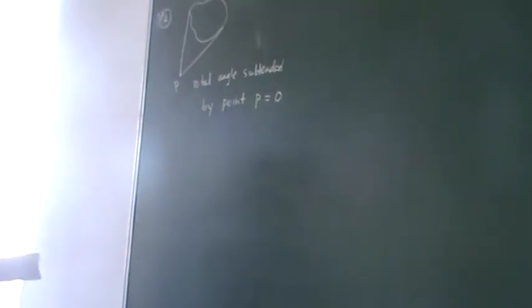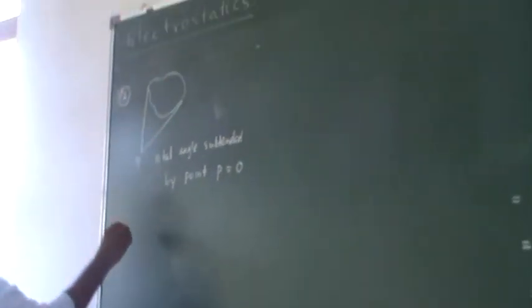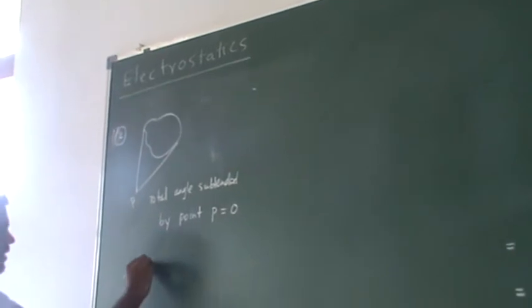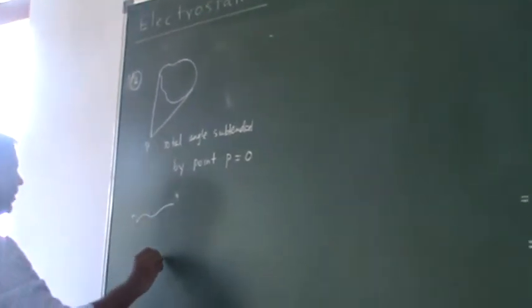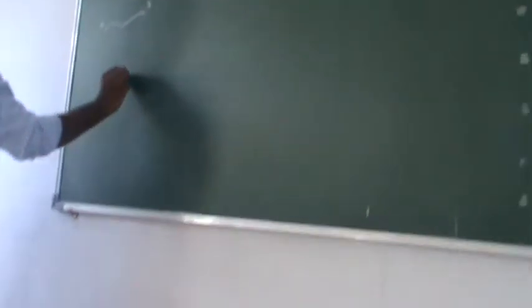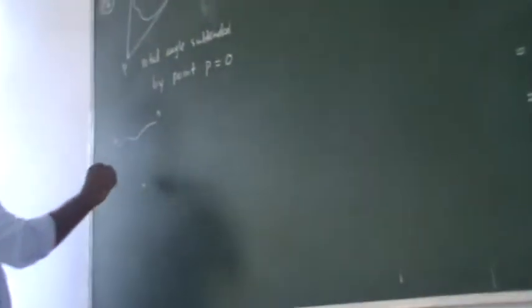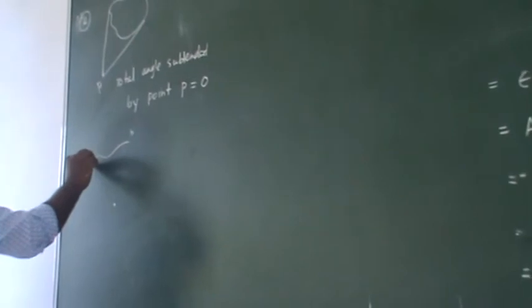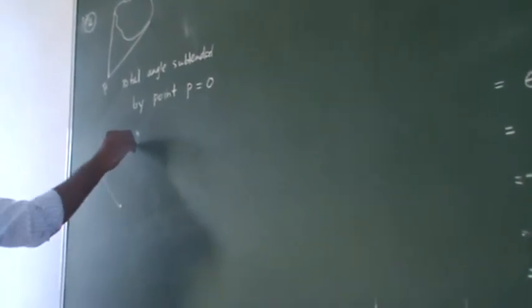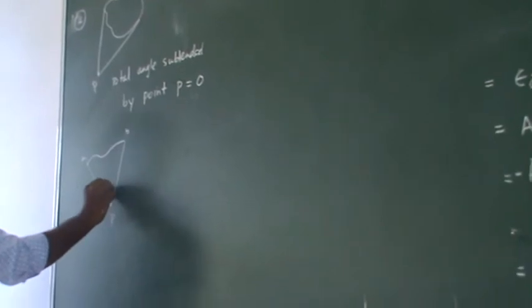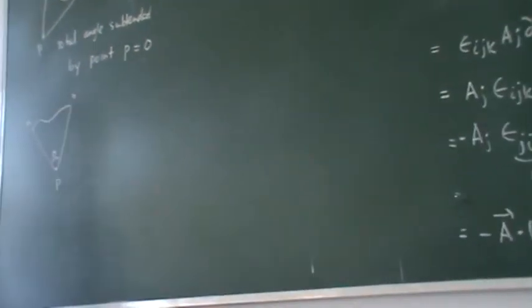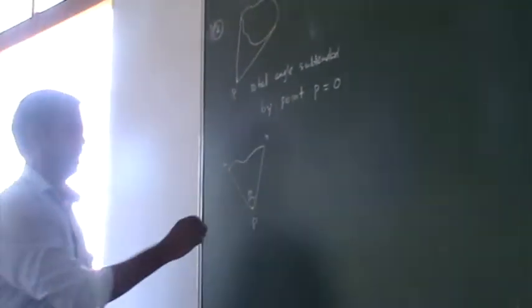What is the general definition of solid angle? Suppose I have here an arbitrary curve that goes from A to B. I have a point here. What is the solid angle subtended by the curve from A to B to this point?